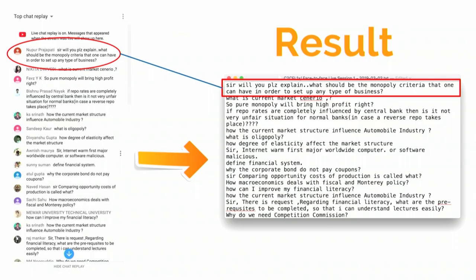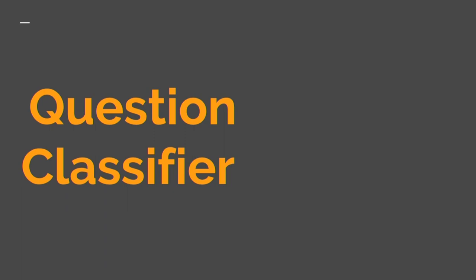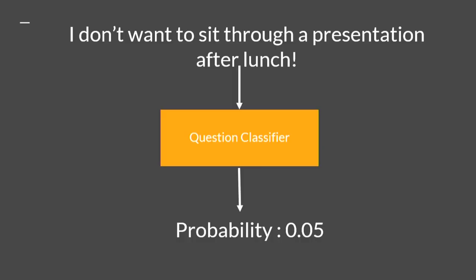This is the result obtained from scraping the data. The third input channel is AVU chat files in CSV format, which can be read using Python. Now with all three channels providing a list of sentences, we pass them through a question classifier. The question classifier takes a sentence and outputs the probability of that sentence being a question.